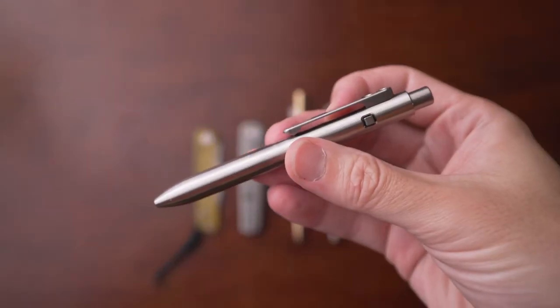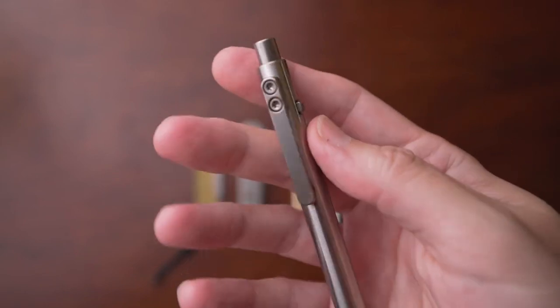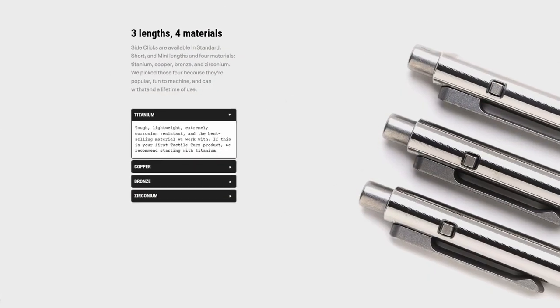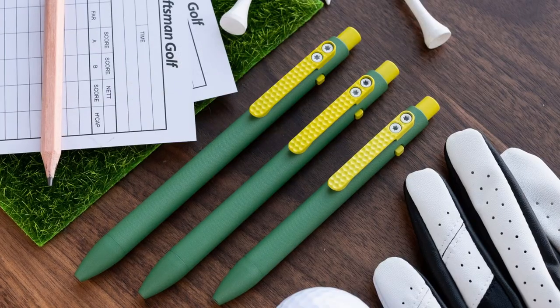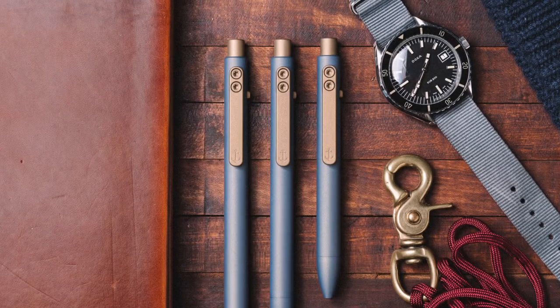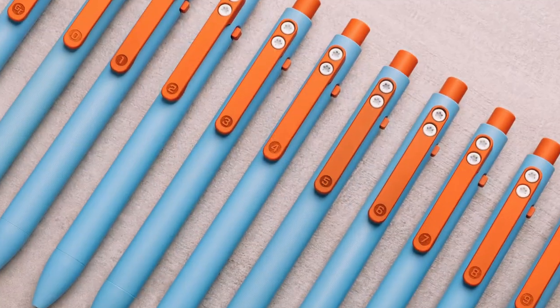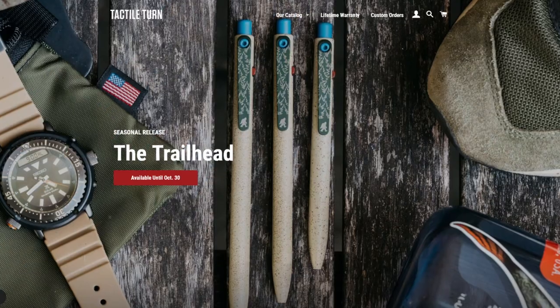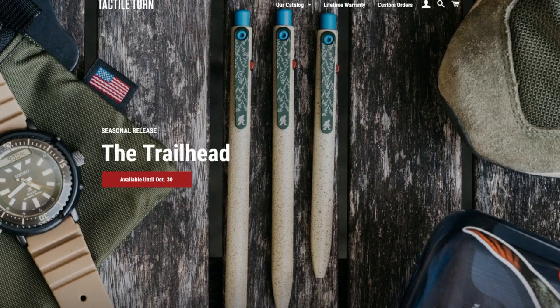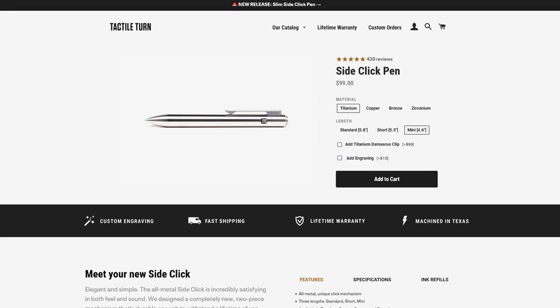Now, the first pen that we're going to be talking about is the SideClick pen. And this one is in the mini size and this one is in titanium. They come in four different materials: titanium, copper, bronze, and zirconium. Another thing to mention is that they also come out with limited edition pens. They'll offer seasonal releases that are special one-offs with a certain theme, whether it be a car theme or a golf theme. And that will be for a specific pen in a specific size. And they also come in three different sizes: standard, short, and mini.